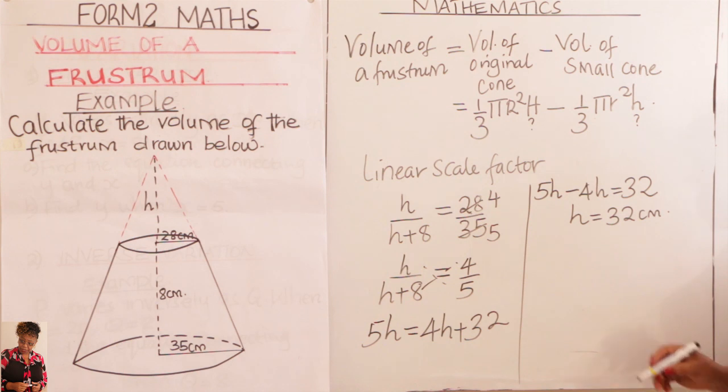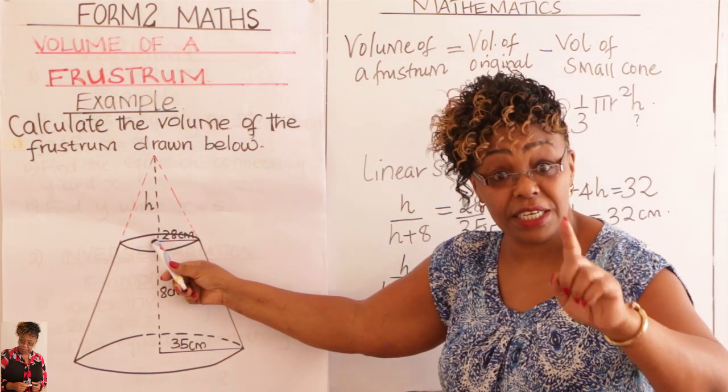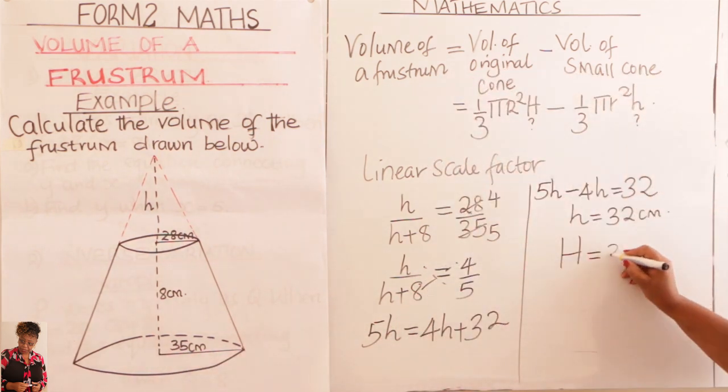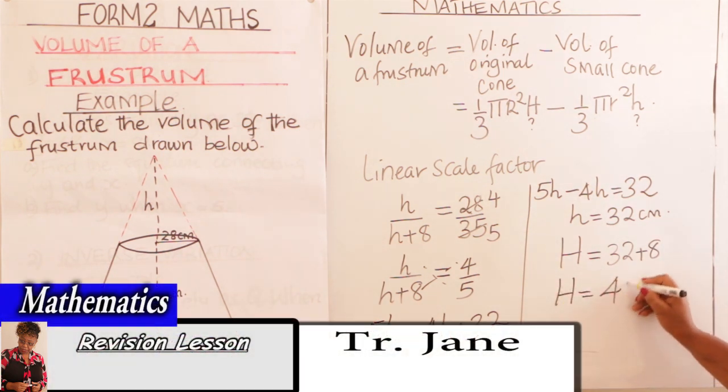That is your small h. What is your capital H? Your capital H equals small h, which you have already got as 32 plus 8. Small h which is 32 plus 8. Small h plus 8. So your capital H is 40 centimeters.